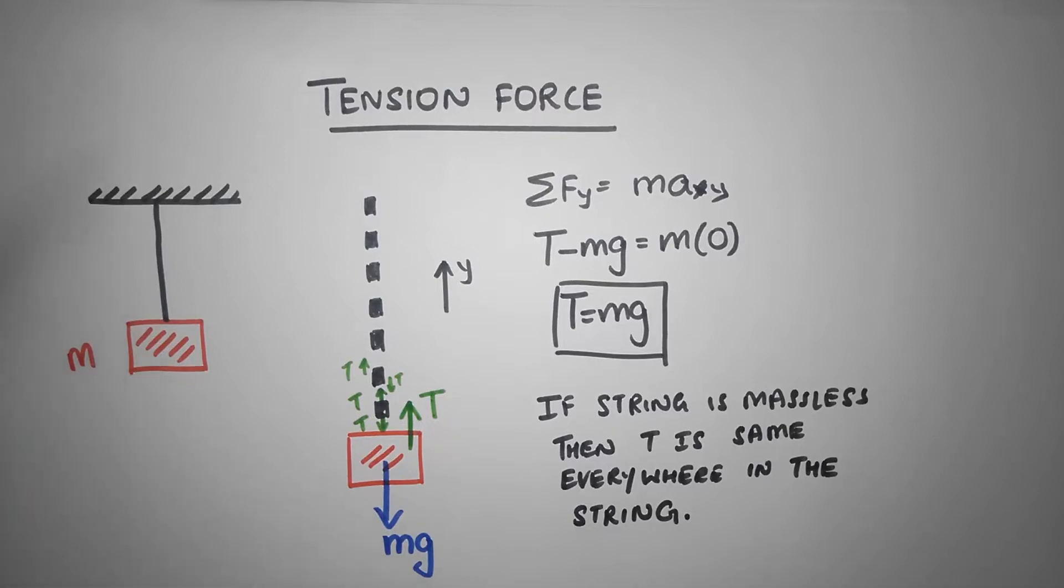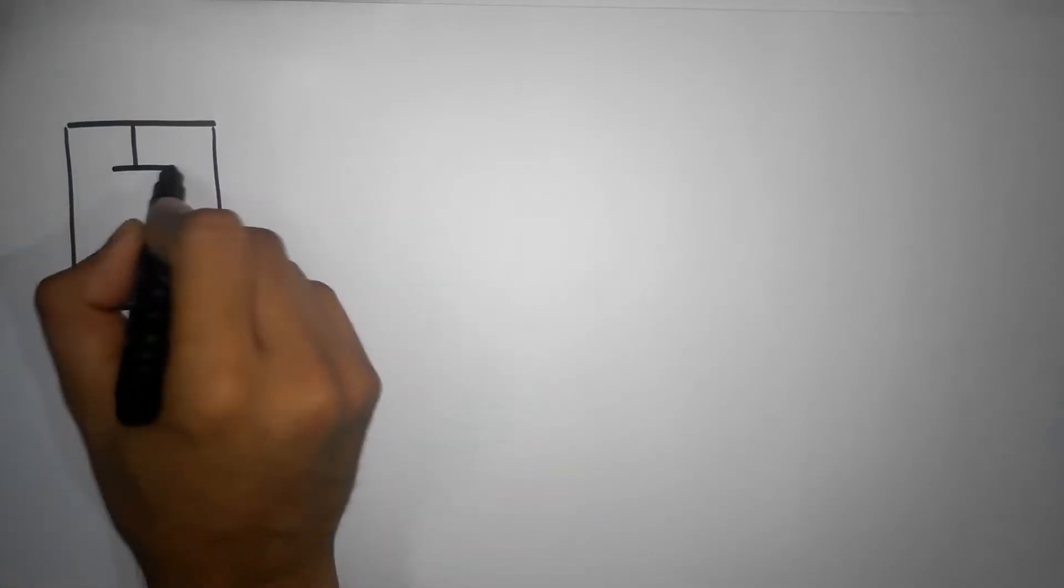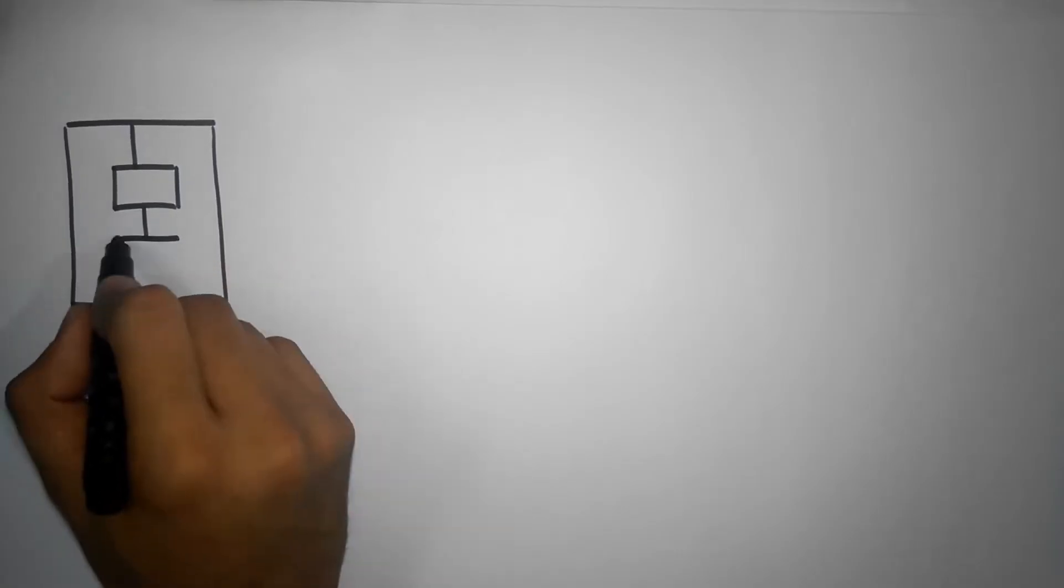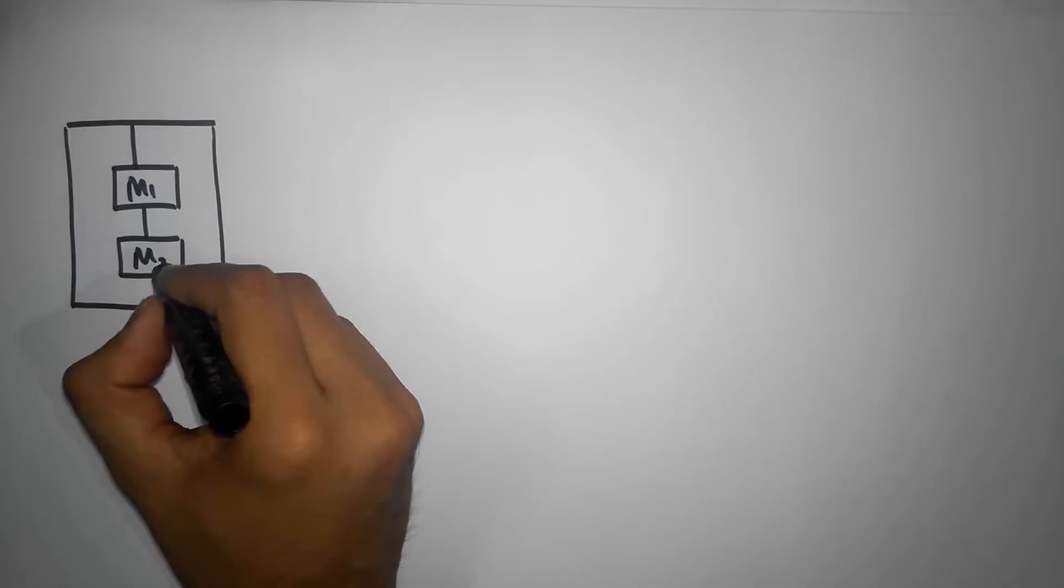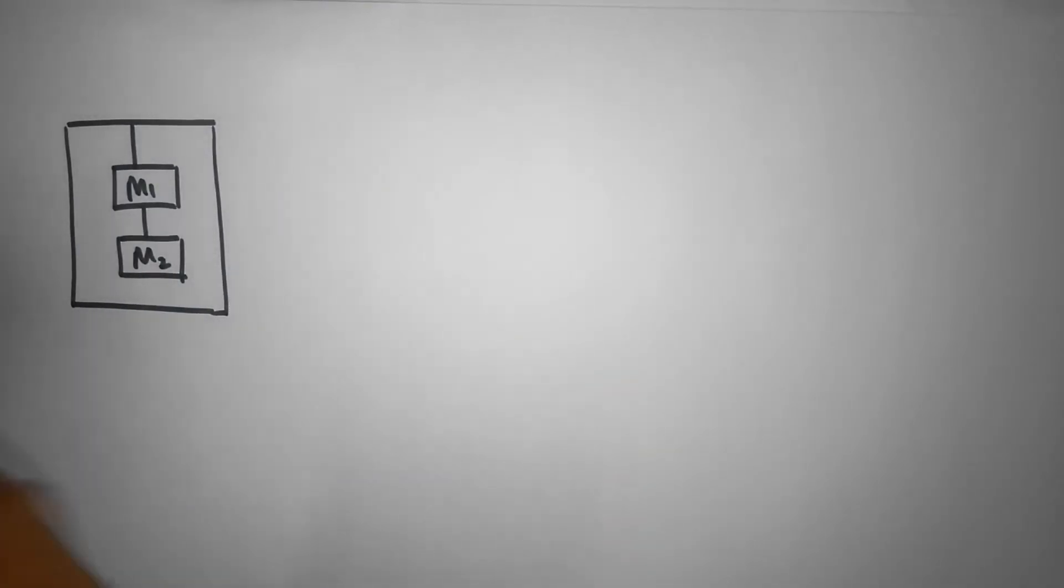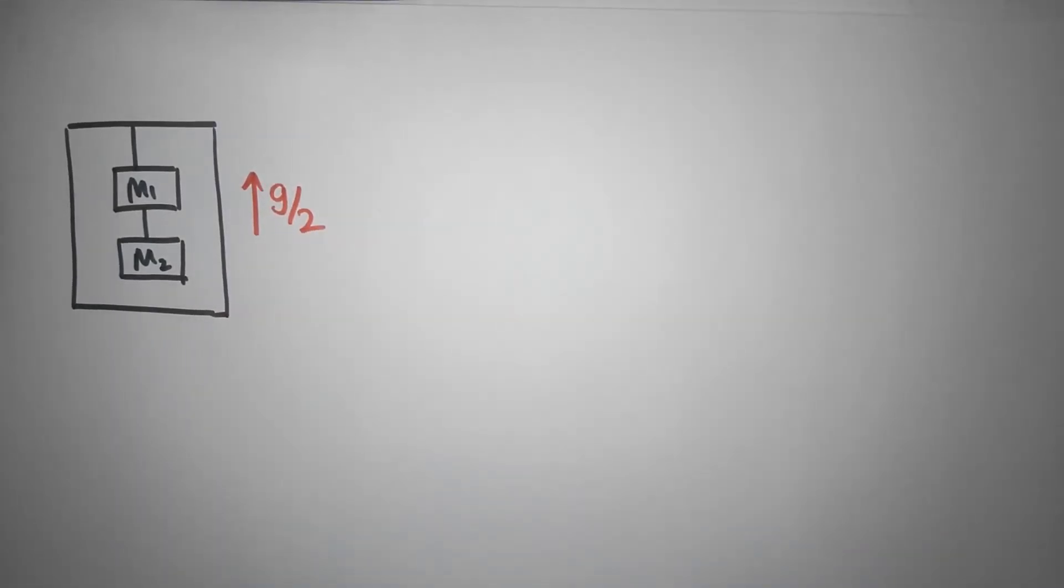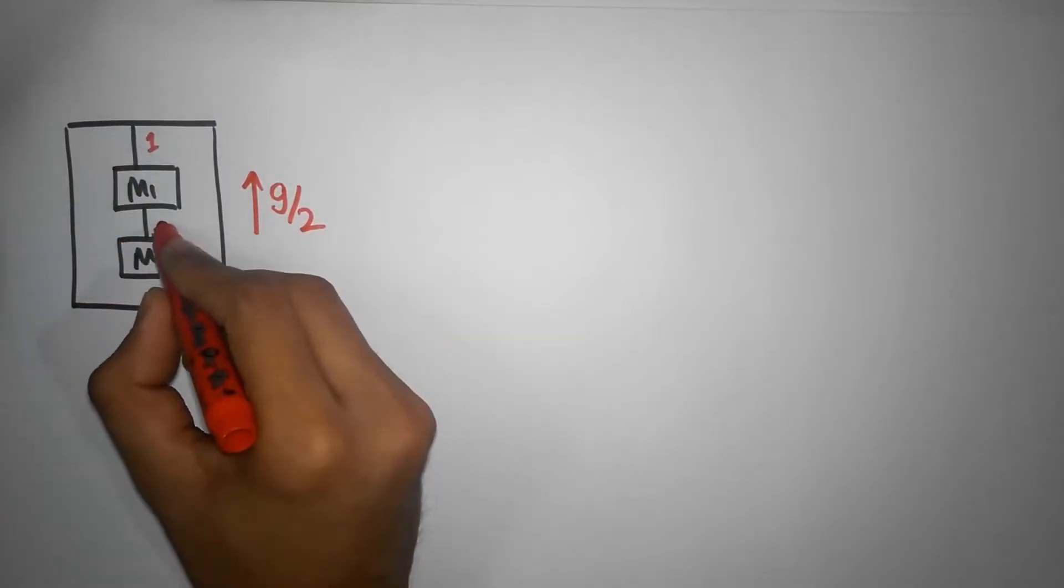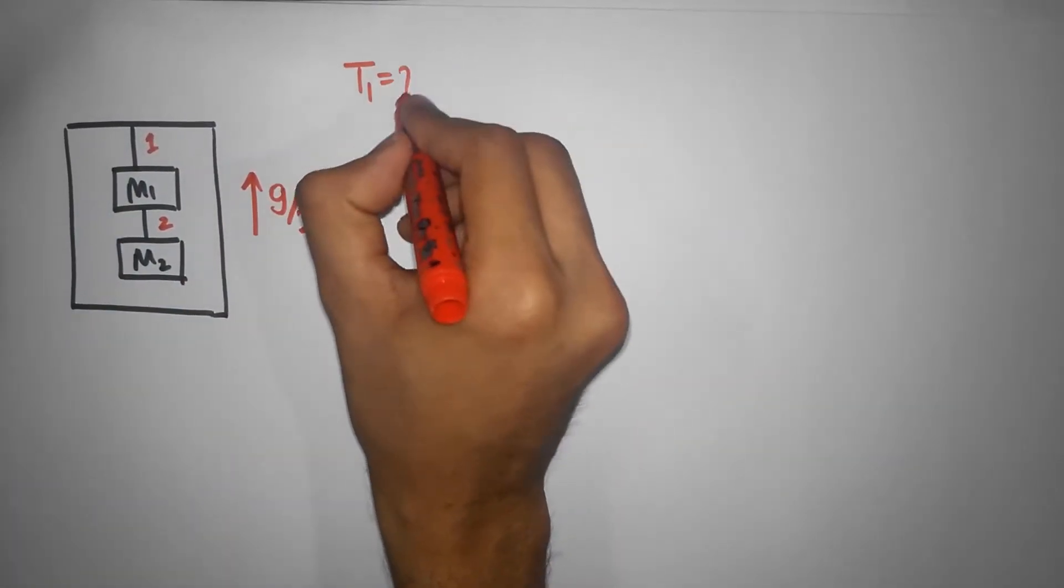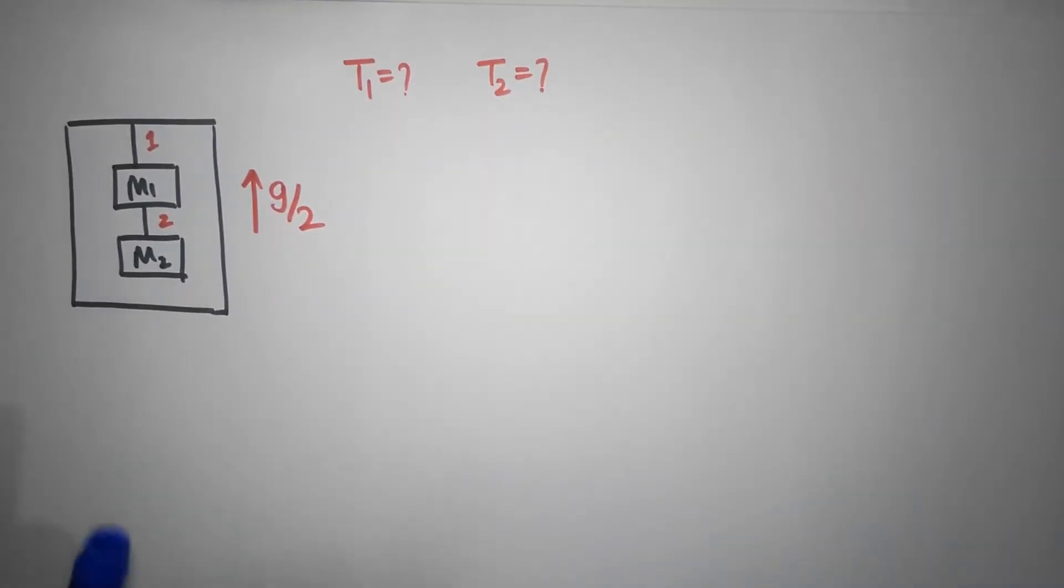All right, so let's take another example. Imagine we are inside an elevator like so, and we have two blocks attached to the elevator with the help of a string. Let's call it as m1 and m2. And the entire elevator is accelerating up with an acceleration of g by 2. And the questions are, this is string 1 and this is string 2, what is the tension in T1, and what is the tension T2 in the string?